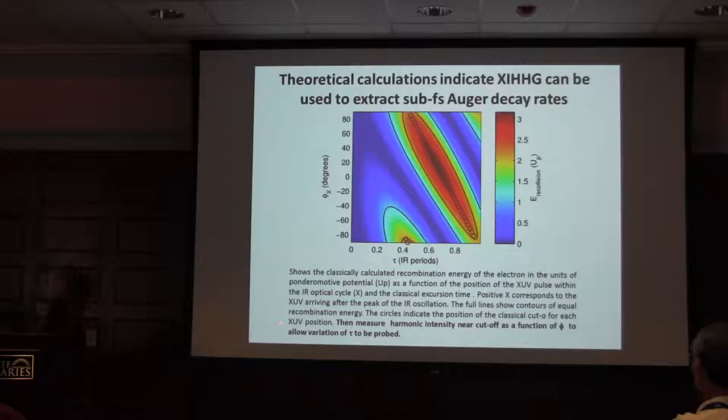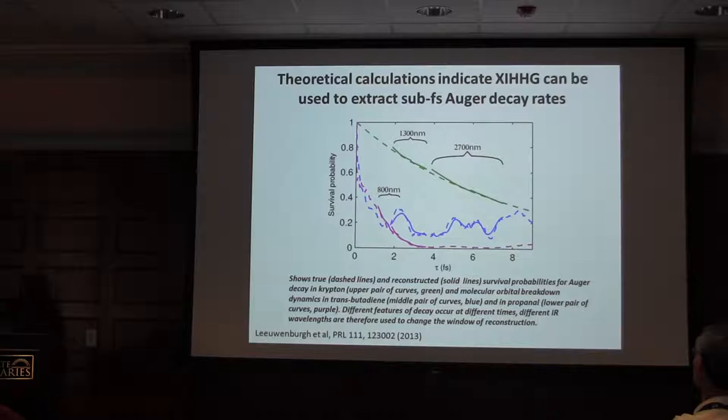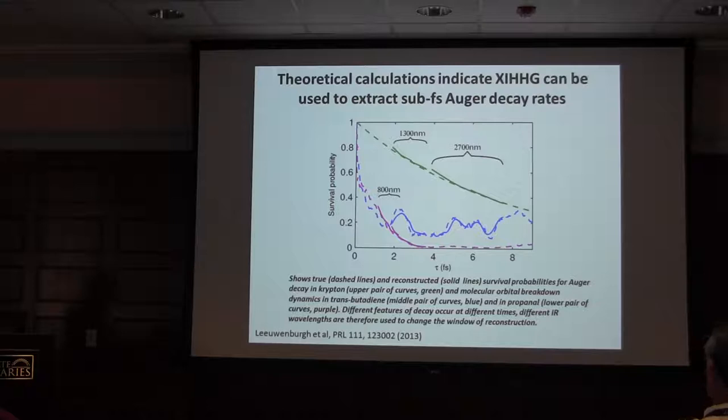Basically, the proposal is to measure the harmonic intensity near the cutoff as a function of that phase φ, to allow us to measure the variation of τ, and then to probe essentially what A(τ) is doing. Here's an explicit set of predictions based upon some calculations. Three cases: krypton, butadiene, and propanol. In the case of krypton, it's the Auger decay that was measured in the original work of attosecond streaking. Basically it has a lifetime of about 7 femtoseconds. It's an exponential decay.